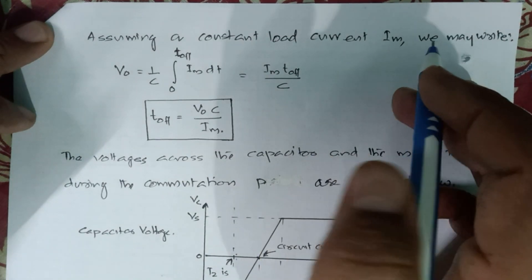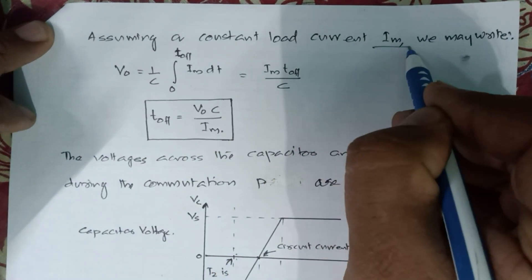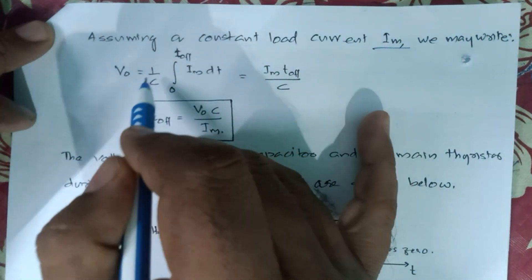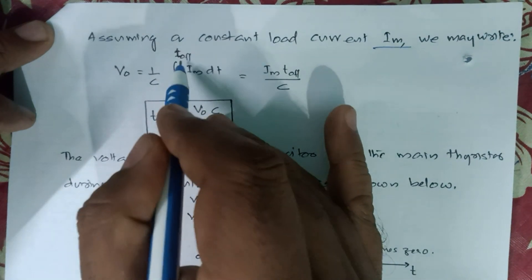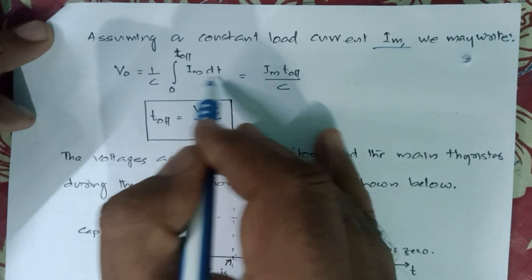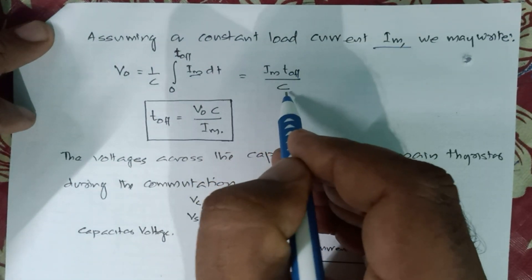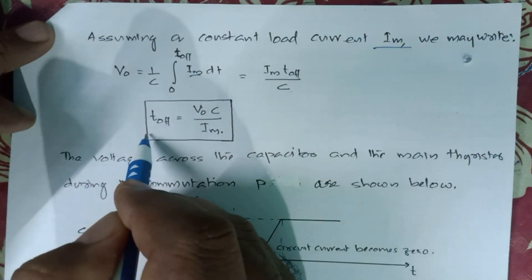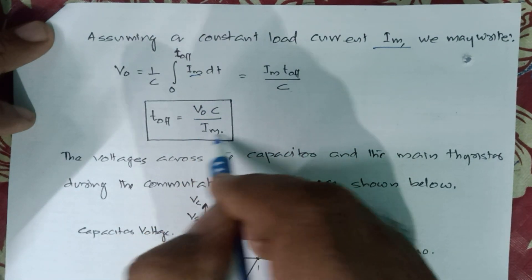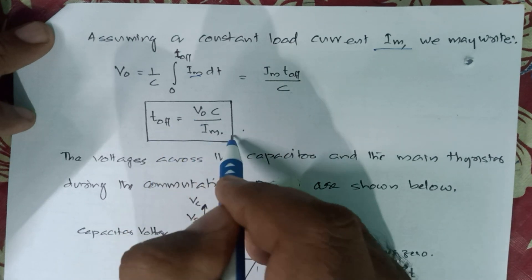Assuming a constant load current Im, we can write the output voltage Vo as (1/C) times the integral from 0 to t_off of Im dt, giving Im × t_off / C. From this, the circuit turnoff time t_off equals V0 × C / Im. This shows that the turnoff time is inversely proportional to the load current.